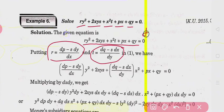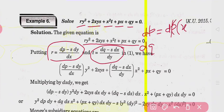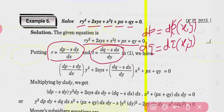You have to find out the value of dp and dq. You know that p is a function of x and y, and q is also a function of x and y. So the total derivative of p will be given by ∂p/∂x · dx + ∂p/∂y · dy. Using this, you find out the values of r and t to place in the given equation.